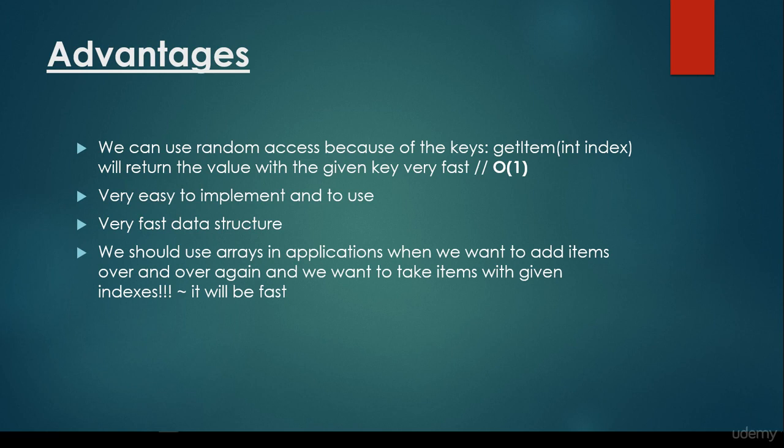We are going to talk about linked lists and linked lists do not support random access in the sense that if we would like to return a value, first we have to search for this given value. Here for arrays, if we know the index, then we are able to return it without any problem in constant time complexity. So this is the random access.